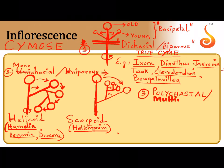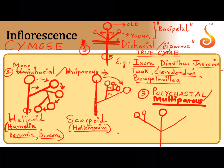The third type of cymose inflorescence is the polychasial (multiparous) cyme, where the floral axis produces more than two branches, each again ending in a cymose arrangement — essentially a repeatedly branching dichasial pattern.